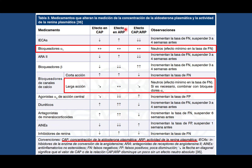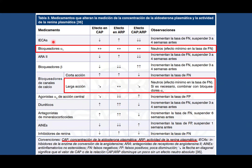Tenemos también medicamentos que tenemos que considerar antes de realizar el estudio de medición de la concentración de aldosterona plasmática y actividad de la renina plasmática, porque esos dos valores nos van a servir para hacer diagnóstico. Algunos pacientes pueden ya estar tomando medicamentos que nos pueden alterar el resultado, como por ejemplo el IECA, los bloqueadores alfa y los diuréticos principalmente.